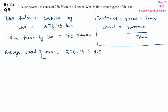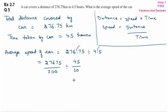First we will convert these into fractions. 276.75 — to remove the decimal, we put it over 1 and since there are 2 digits after the decimal, we multiply denominator by 100, giving 27675/100. Similarly, 4.5 becomes 45/10. Now we change division into multiplication and write the reciprocal of 45/10, which gives us 27675/100 × 10/45.